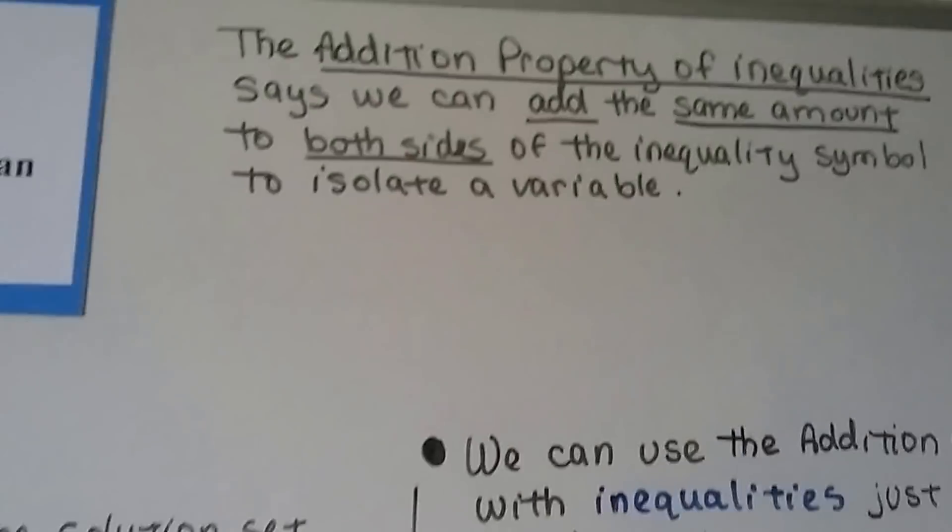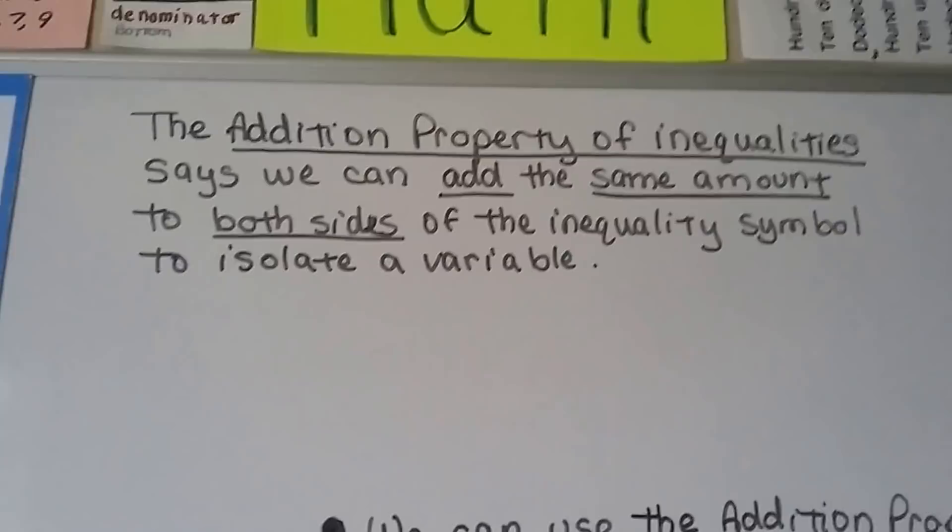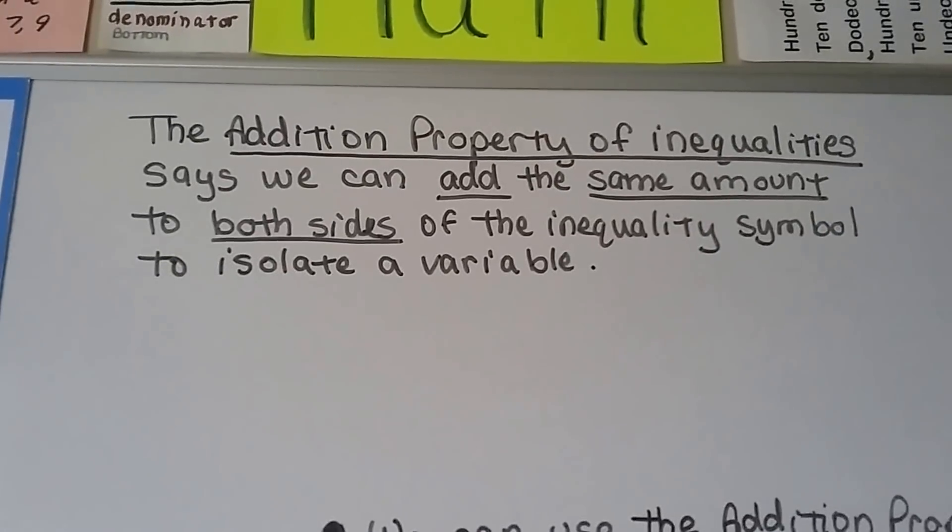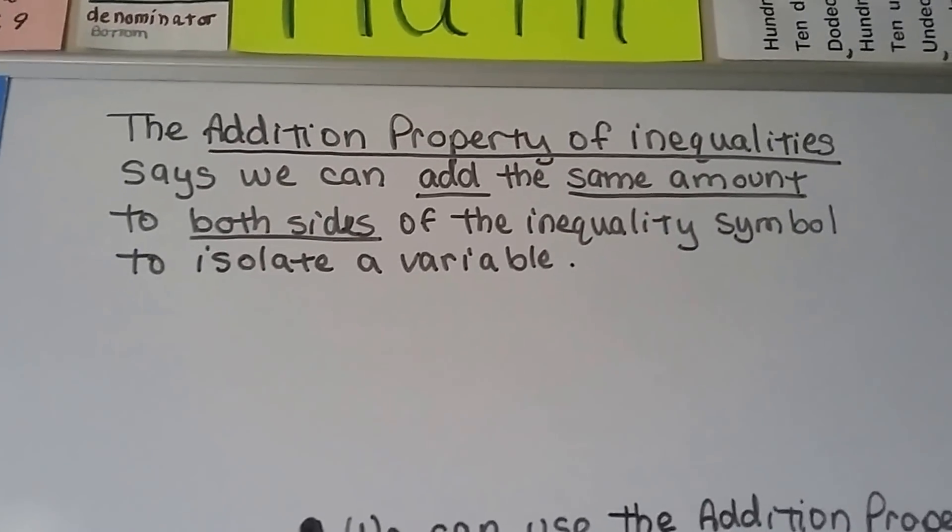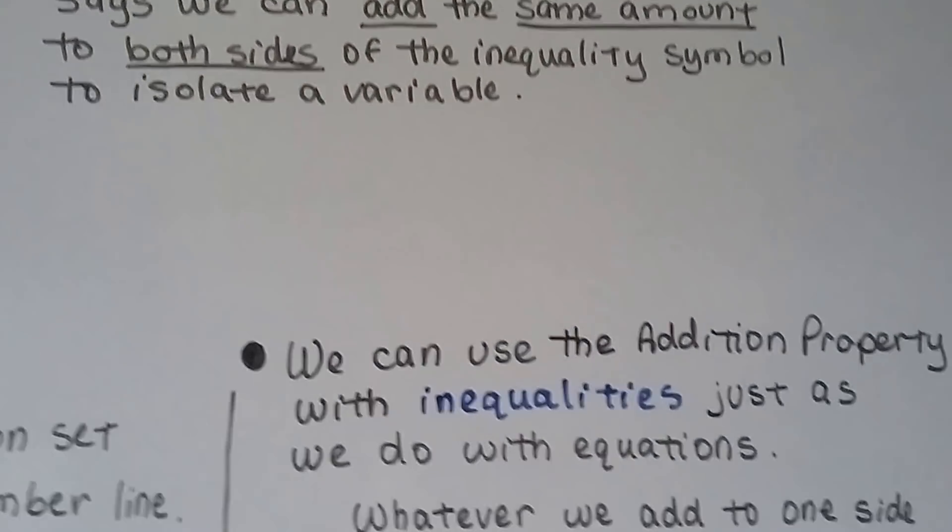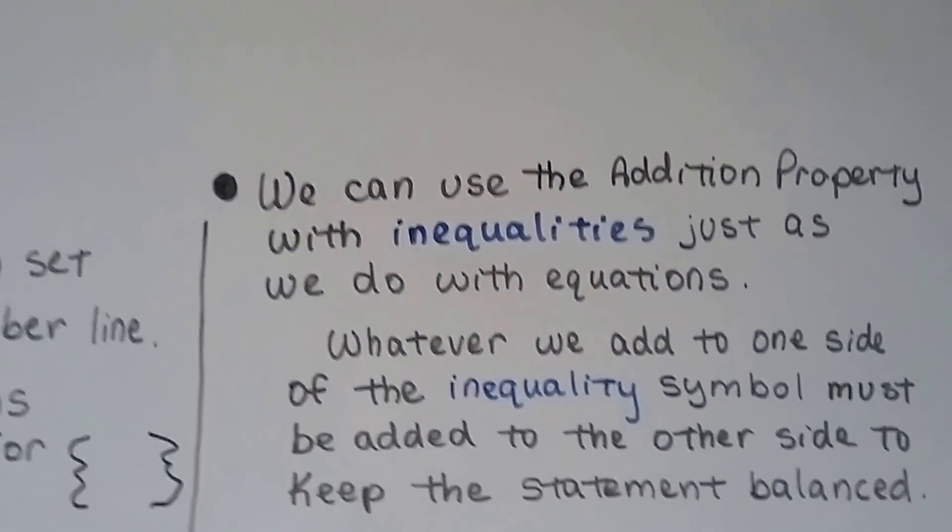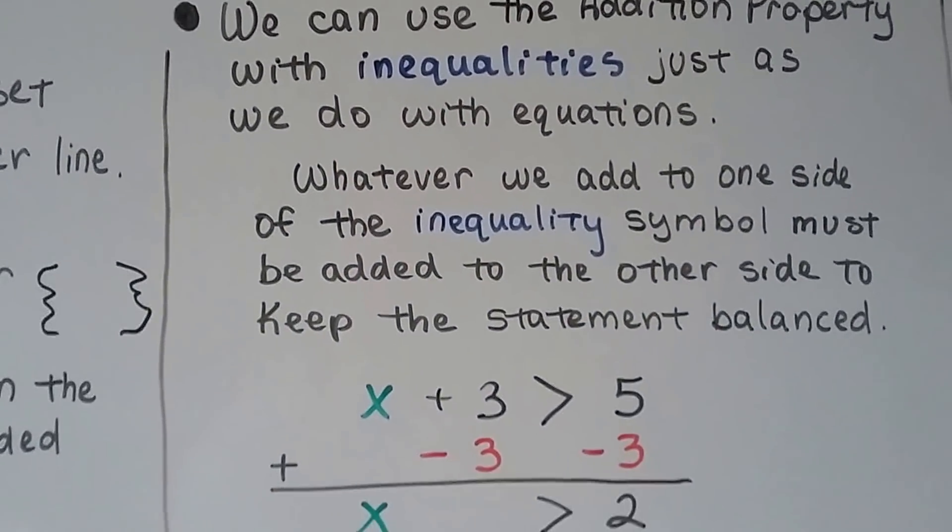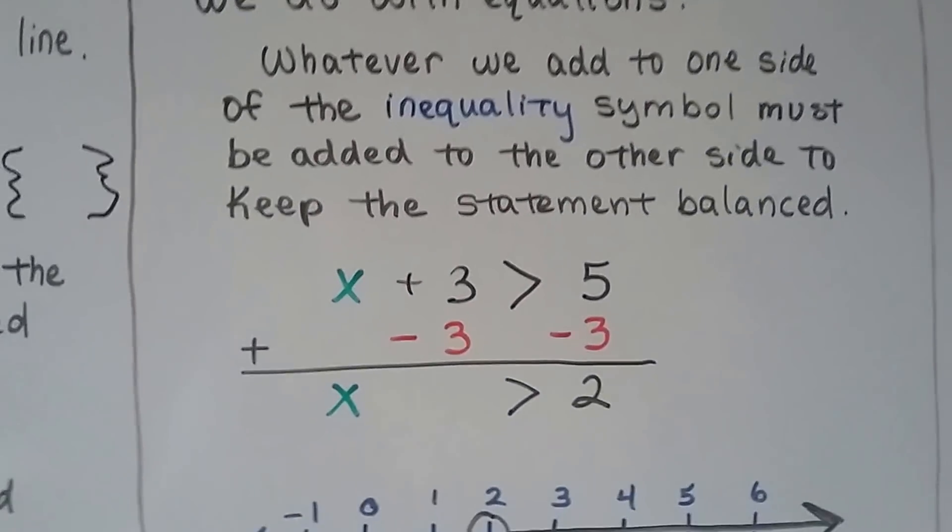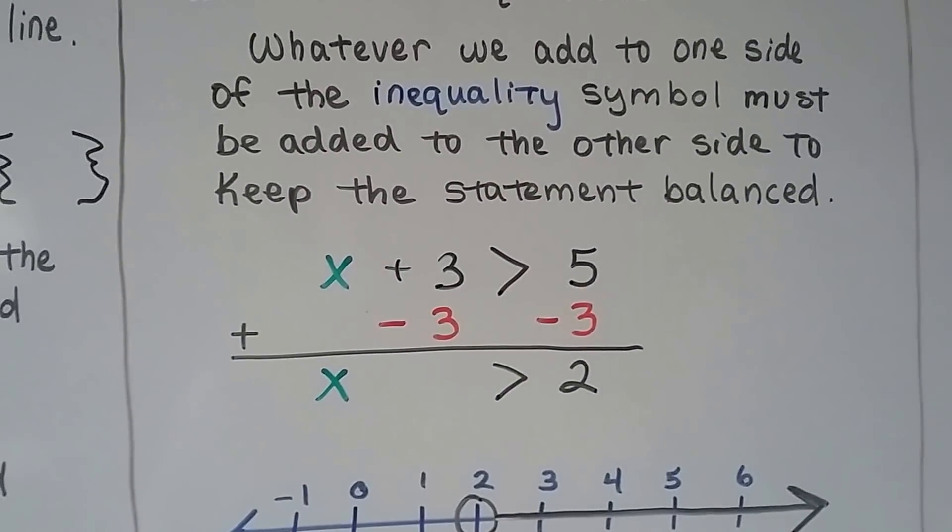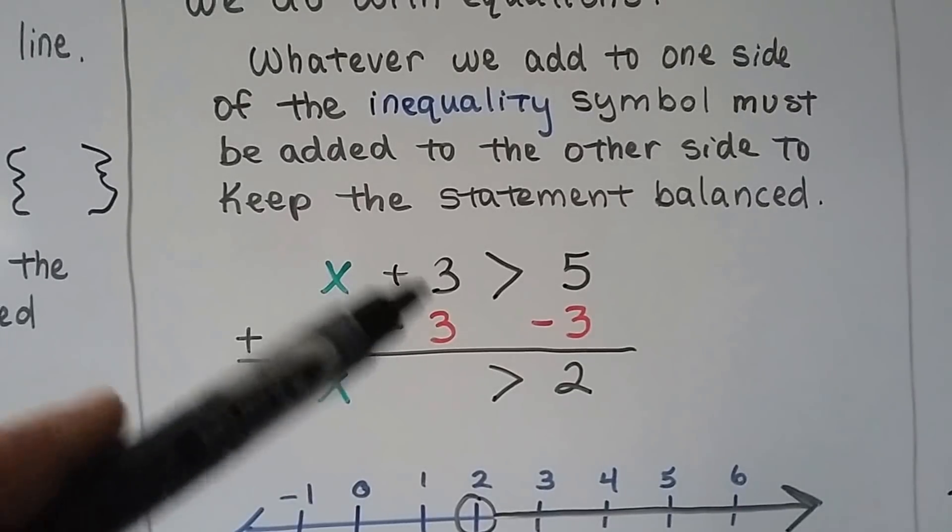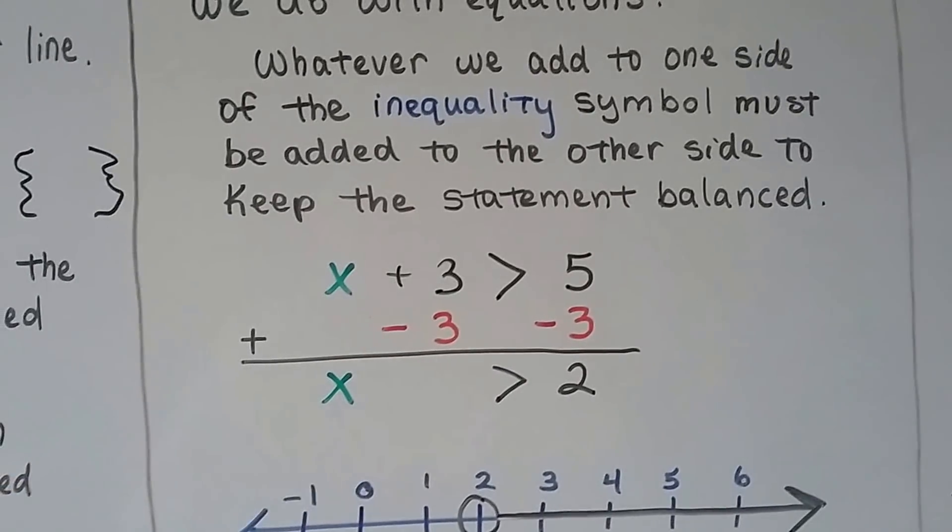Now, the addition property of inequality says that we can add the same amount to both sides of the inequality symbol to isolate a variable. And we can use the addition property with inequalities just as we do with equations. Whatever we add to one side of the inequality symbol must be added to the other side to keep the statement balanced. So just like we made zero pairs before, we can do it with inequalities.